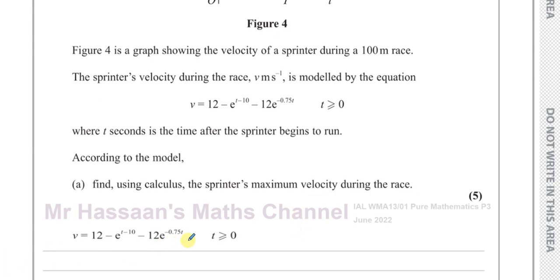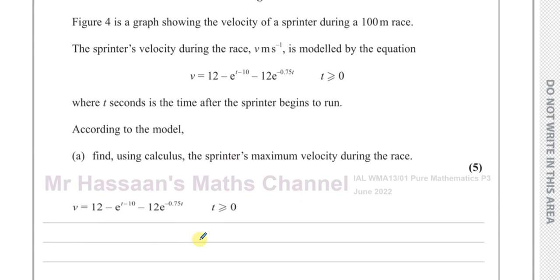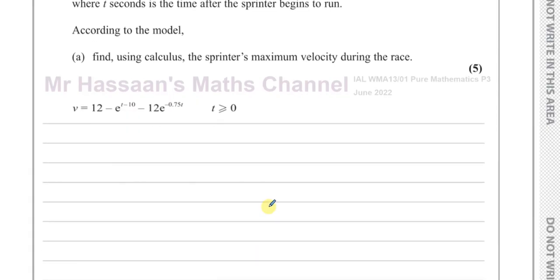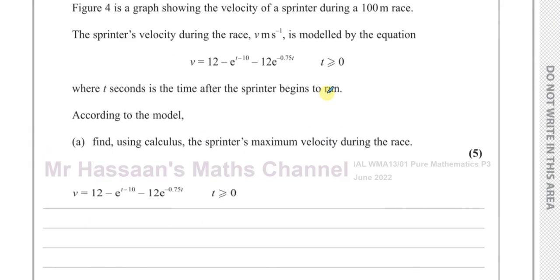So that's what we have to find, the maximum value. The maximum of a function by calculus is found by finding the differential. By differentiating the function, you get the gradient function. And when the gradient function is equal to 0, then you find the maximum or the minimum. In this case, that's going to be the maximum.